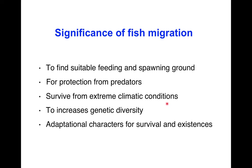The significance of fish migration is that it is a very important phenomenon for fishes. It provides protection from predators, helps fishes get suitable feeding and spawning grounds, and helps fishes survive extreme climatic conditions. It also helps in increasing genetic diversity and is an adaptational character for the survival and existence of fishes.